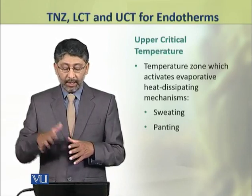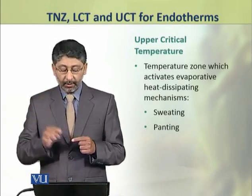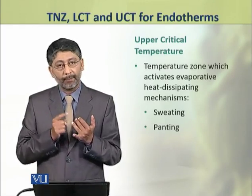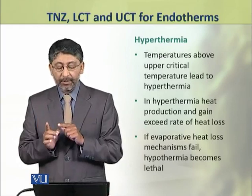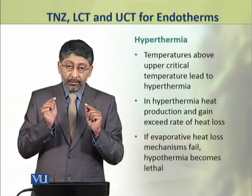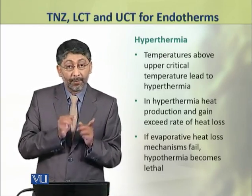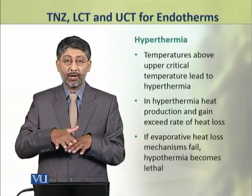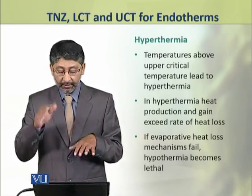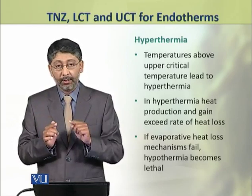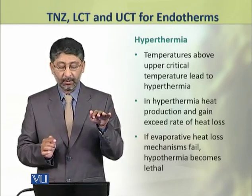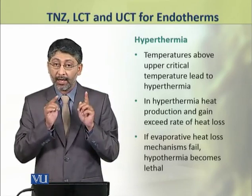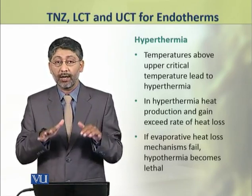Dear students, the upper critical temperature is the temperature zone which activates evaporative heat dissipating mechanisms like sweating and panting. Above the upper critical temperature, the condition becomes hyperthermia. Agar temperature upper critical temperature se barh jata hai to us case mein animal ki body temperature badhna shuru ho jati hai — this condition is called hyperthermia, in which heat production exceeds heat loss. Agar evaporative heat loss mechanism, jo body temperature ko control karne ke liye istemal hota hai, fail ho jata hai, then hyperthermia becomes lethal.